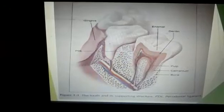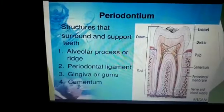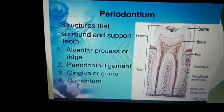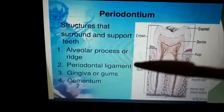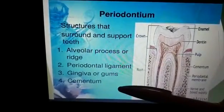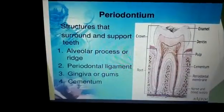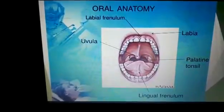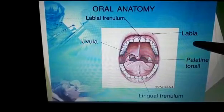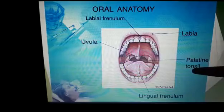Another important term is the periodontium — these are the structures that support and surround the tooth. The periodontium includes the alveolar process or ridge, the periodontal ligament, the gingiva or gums, and the cementum. These are all the connecting structures. The boundaries of the oral cavity include the labial frenum, labia, and palatine tonsils.